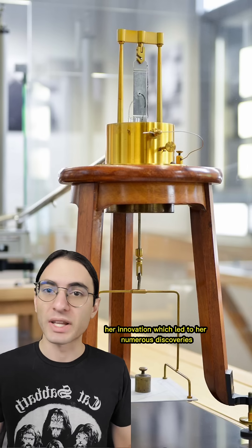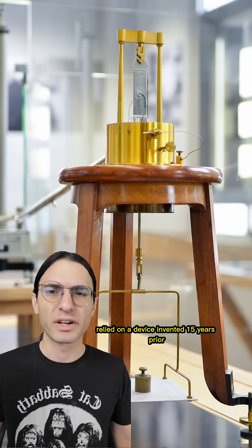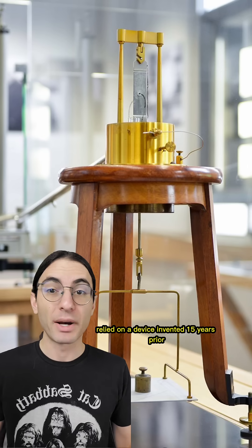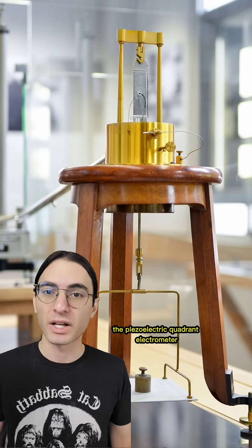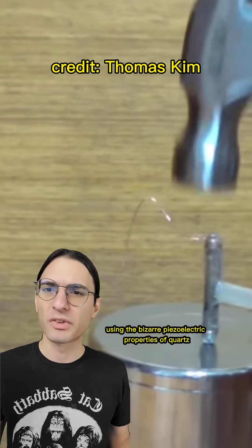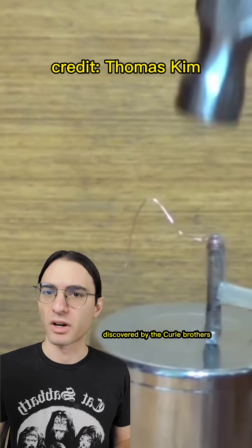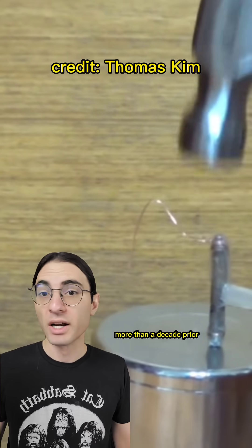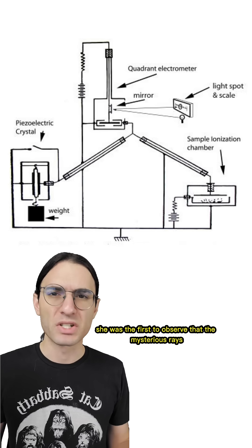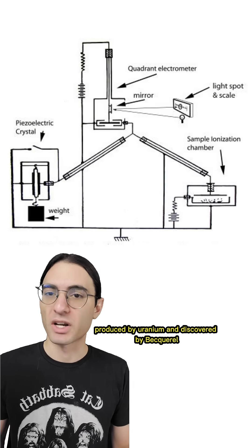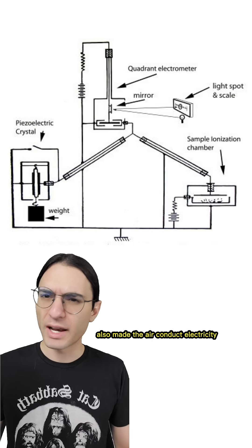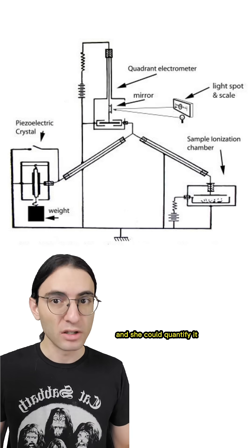Her innovation, which led to her numerous discoveries, relied on a device invented 15 years prior by her husband and his brother, the piezoelectric quadrant electrometer. Using the bizarre piezoelectric properties of quartz discovered by the Curie brothers more than a decade prior, she was the first to observe that the mysterious rays produced by uranium and discovered by Becquerel also made the air conduct electricity, and she could quantify it.